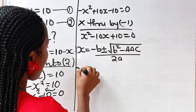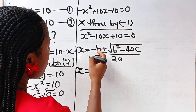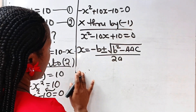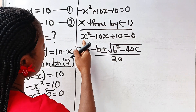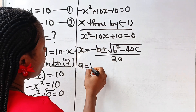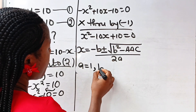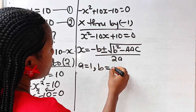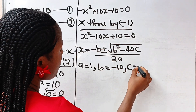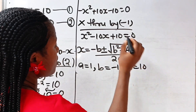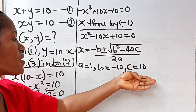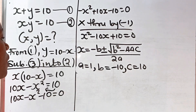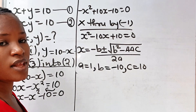So x is equal to — identifying our coefficients: a is the coefficient of x squared, which is 1; b is the coefficient of x, which is minus 10; and c is the constant, which is 10. Now let's substitute these into the formula.